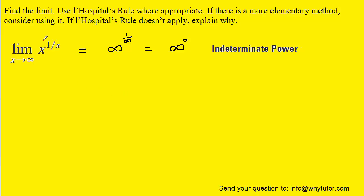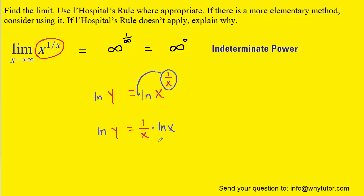One of those other methods involves setting y equal to this expression — basically whatever your function is. So let's write out that function. After writing that function, we would take the natural log of both sides of that equation, and then using the properties of logarithms, that's going to allow us to take this power and transfer it to the front of the expression. If we put ln(x) over 1, we can multiply the two fractions: 1 times ln(x) is ln(x), and x times 1 is x. So let's rewrite it.